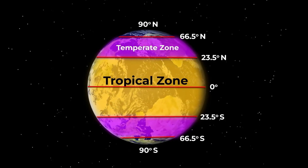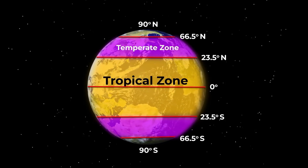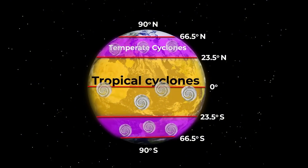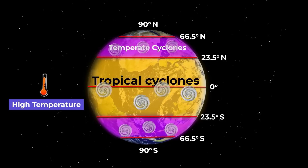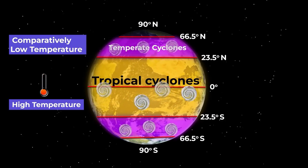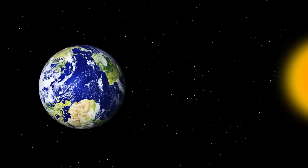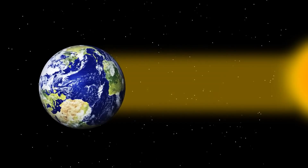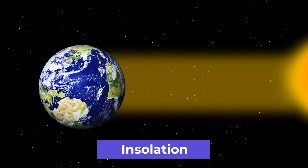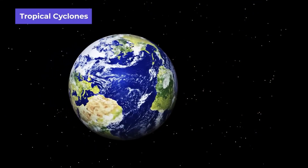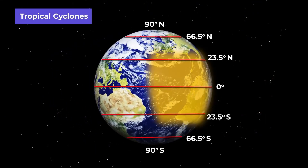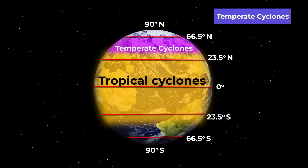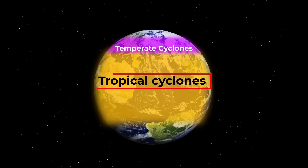The cyclone appearing in the tropical zone is called a tropical cyclone, whereas the cyclone appearing in the temperate zone is called a temperate cyclone. The difference in these zones is basically of temperature, where high temperatures are found in the tropical zone and comparatively lower temperatures in the temperate zone. The reason behind this temperature difference is incoming solar radiation from the sun, what we call insolation. Because tropical cyclones are more heated, they are more devastating than temperate cyclones.